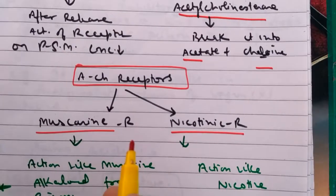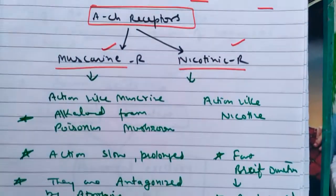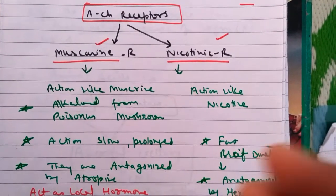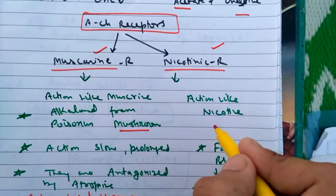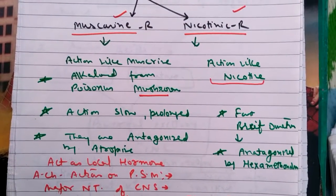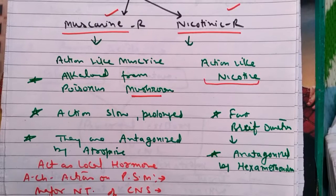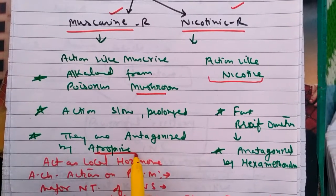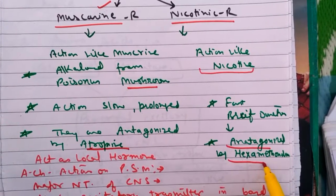There are two types of acetylcholine receptors: muscarinic receptors and nicotinic receptors. Muscarinic receptors have the same structure and function as the alkaloid from poisonous mushrooms, and nicotinic receptors have the same role that nicotine plays. Muscarinic receptors act slowly and with prolonged duration, while nicotinic receptors have a fast and brief effect. They are antagonized by atropine, which is a poison from a plant, and inhibited by hexamethonium.